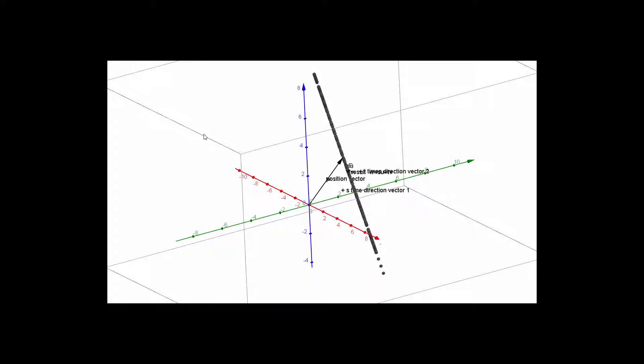So that is two direction vectors times scalars plus a position vector has basically resulted in a plane. And what you will notice in particular is that that plane contains both of the direction vectors.